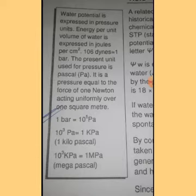What is water potential? What is it expressed in? It is expressed in pressure units. What is Joule's definition? Joule is energy per unit volume of water, expressed in Joule per centimeter square.